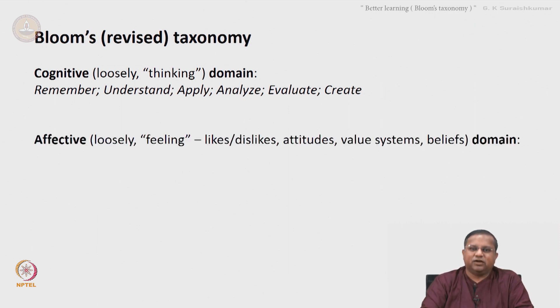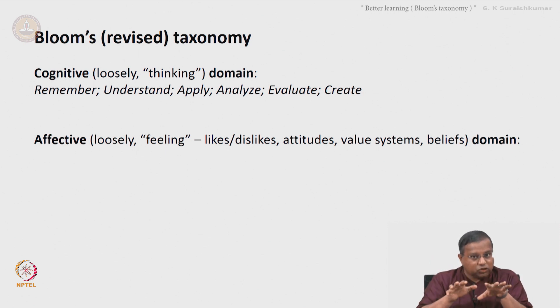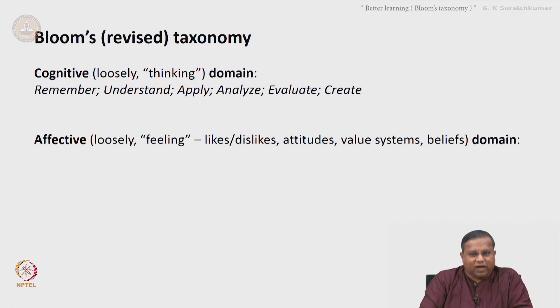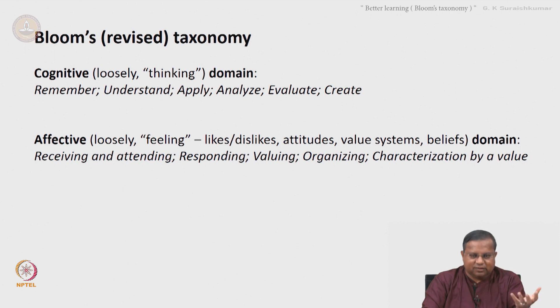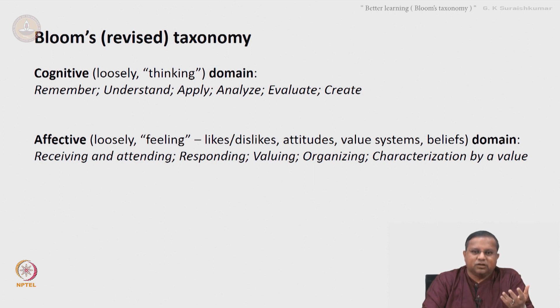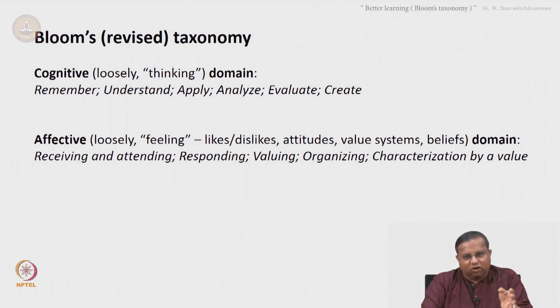The second domain is the affective domain — loosely, the 'feeling' aspects that go along with learning, such as likes and dislikes, attitudes, value systems, and beliefs that determine how a person learns. For example, receiving and attending to some information, how a student responds to that information, organizing, valuing, and characterization by a value are the various levels of learning in the affective domain.